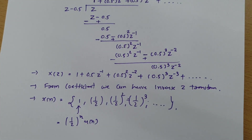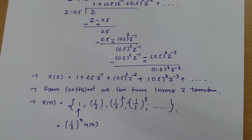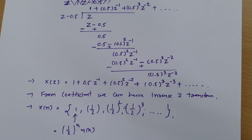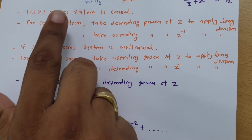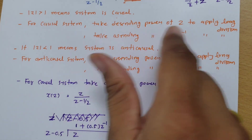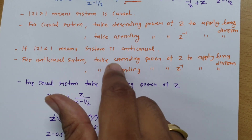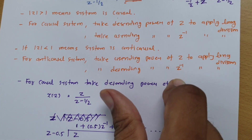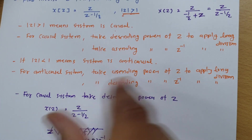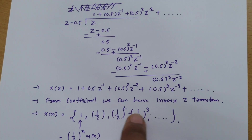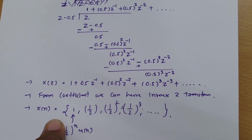This is how we solve examples based on the long division method. When applying this method: if modulus of Z is greater than 1, it is a causal system — take descending power of Z or ascending power of Z inverse. If modulus of Z is less than 1, it is an anti-causal system — take ascending power of Z or descending power of Z inverse. Rearrange X(Z) accordingly, perform long division, and from the resulting polynomial compare coefficients to obtain x(n).